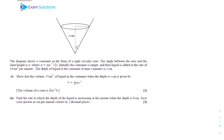For question 2, the diagram shows a container in the form of a right circular cone, and the angle between the axis and the slant height is α, where α = tan⁻¹(1/2). Initially it is empty, then liquid is added at a rate of 14 cm³ per minute, so dV/dt = 14. For part 1, show that the volume V cm cubed of the liquid in the container when the depth is x cm is given by V = (1/12)πx³.